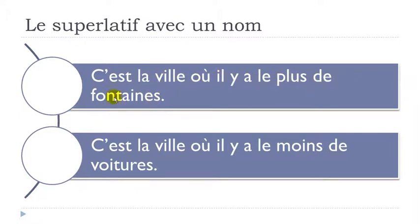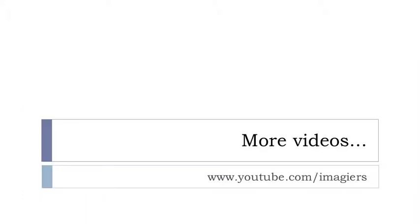'C'est la ville où il y a le plus de fontaines' — 'C'est la ville où il y a le moins de voitures.' That's the way you construct this superlative avec un nom. It's quite easy, I hope it was clear.